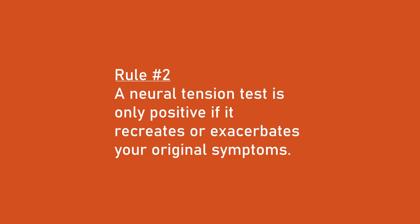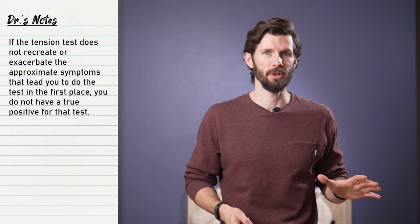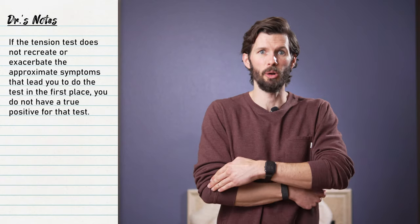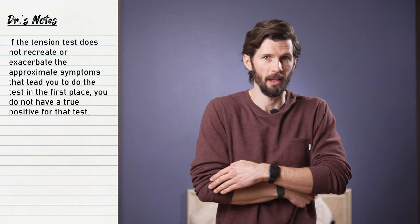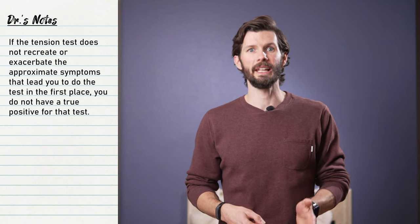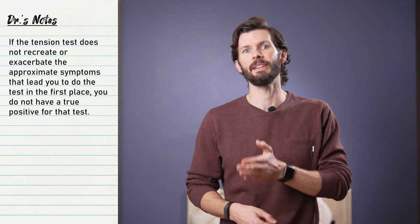Rule number two: a neural tension test is only positive if it recreates or exacerbates the approximate symptoms that led you to do the test in the first place. For example, if you want to find out why you have pain on the outside of your elbow, but the neural tension test causes some tingling in your thumb, that is not a positive test for your symptoms, as it did not recreate your outer elbow pain. You may have some mild neural tension, but that is not likely the cause of your elbow pain in that instance.